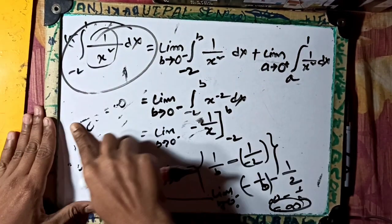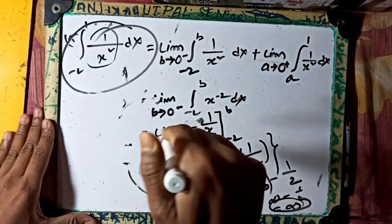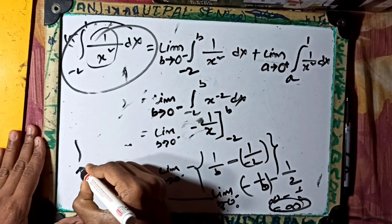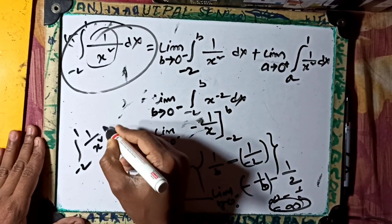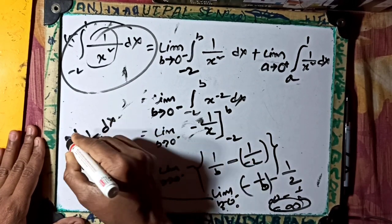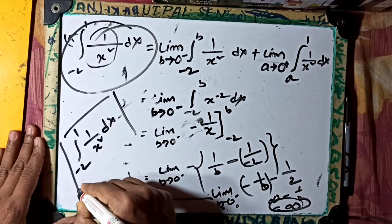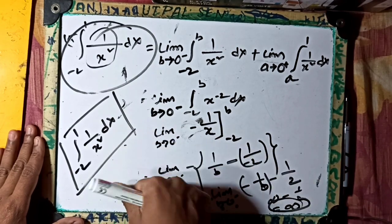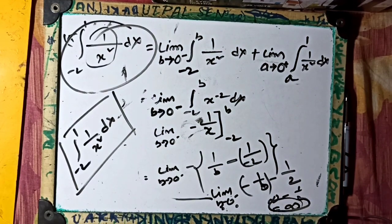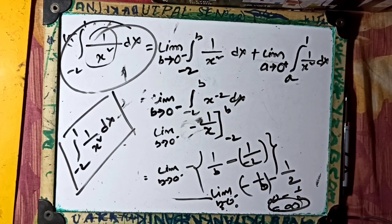This condition — the integral of 1 by x squared dx — is not possible. This is not possible. Thank you. If you like and share, subscribe to the video, please like and share.